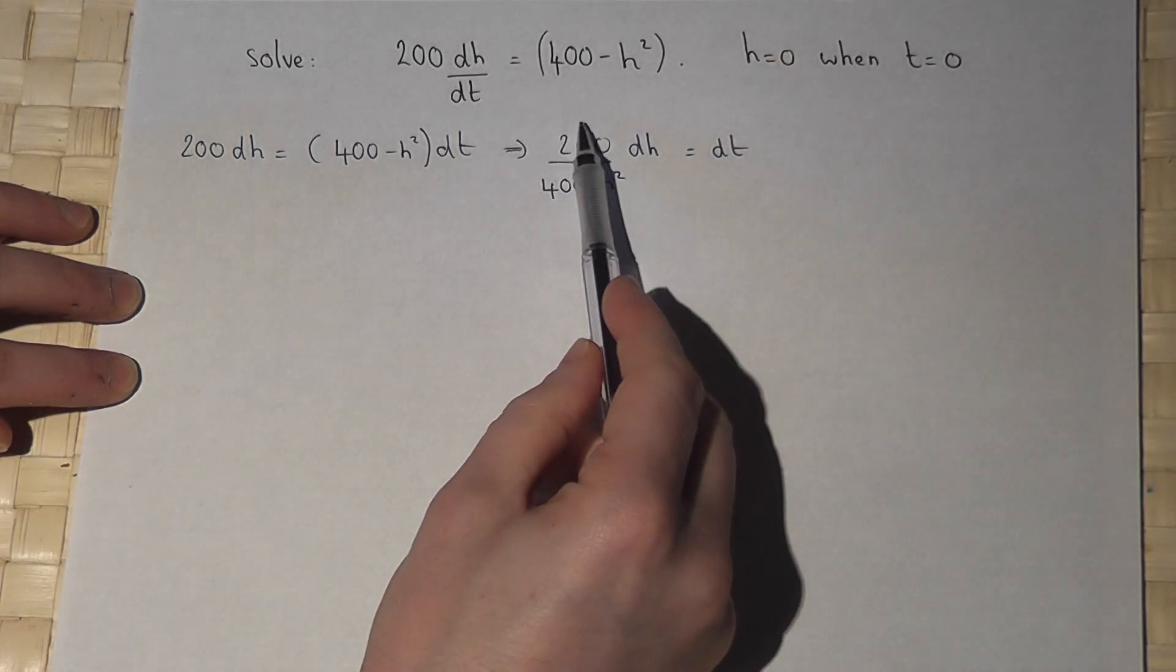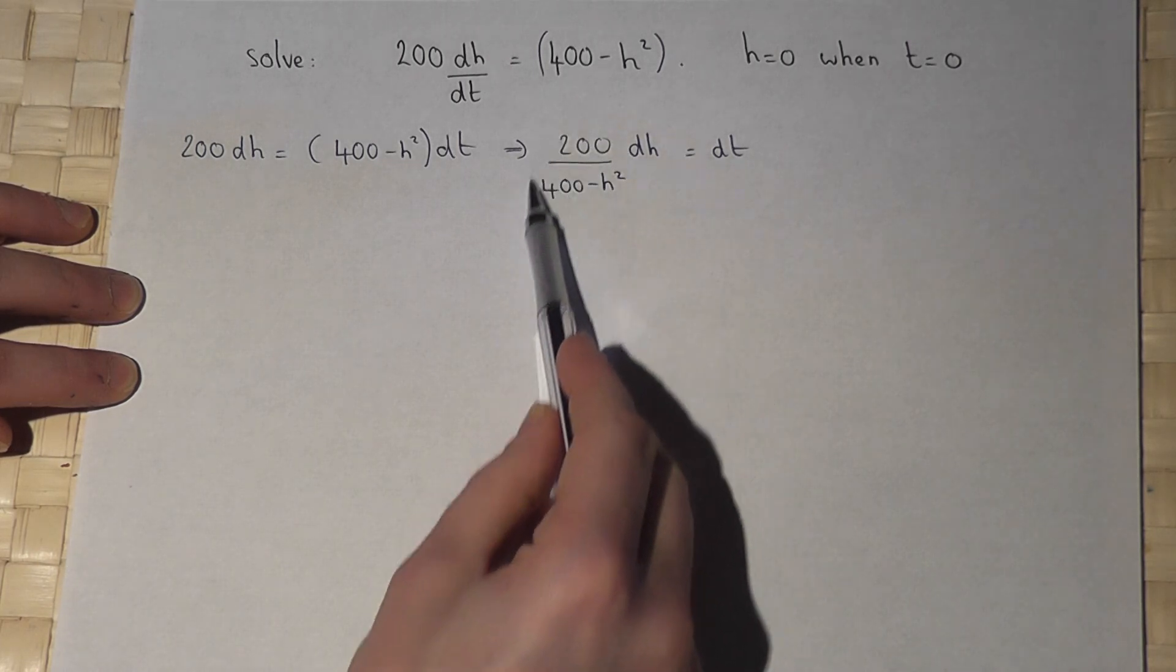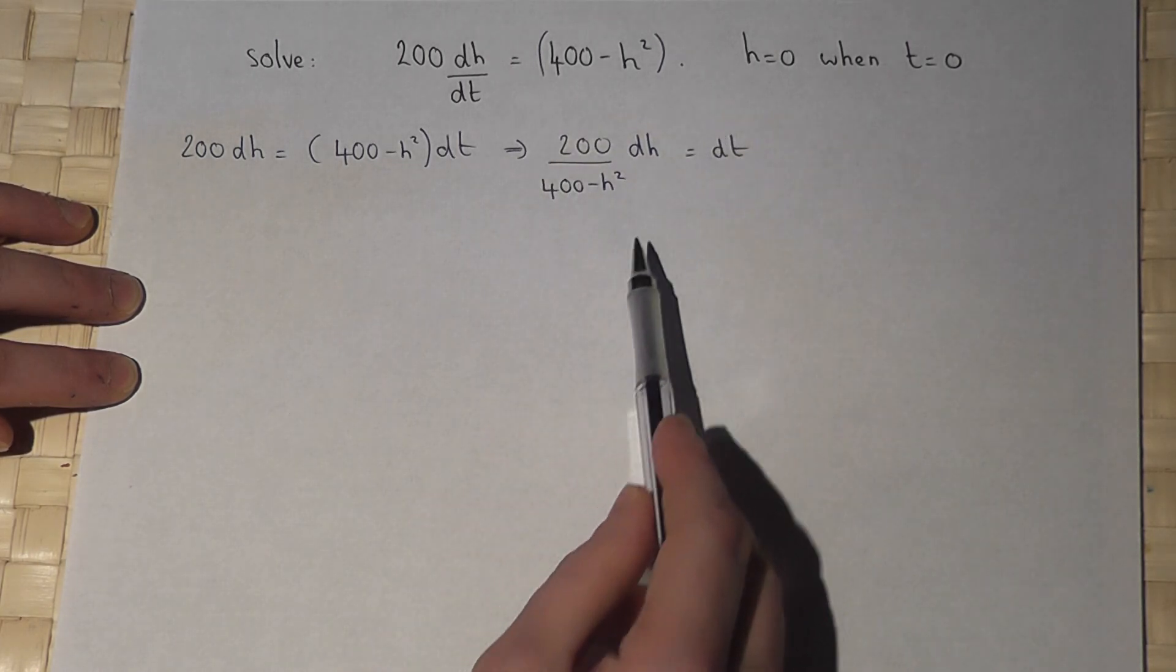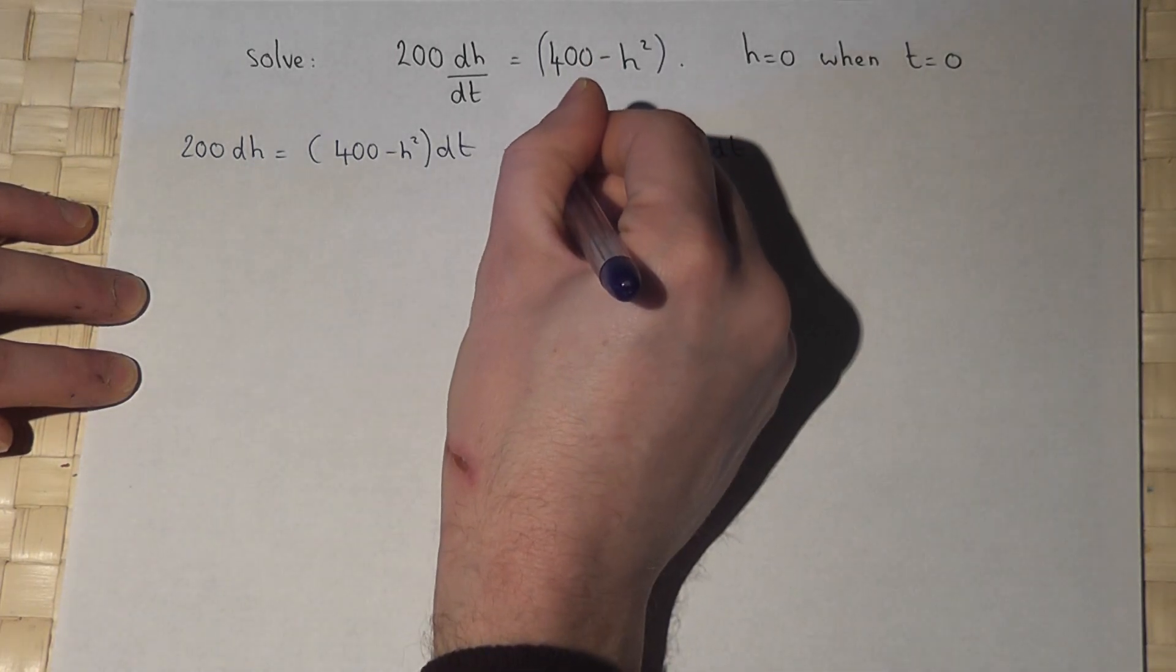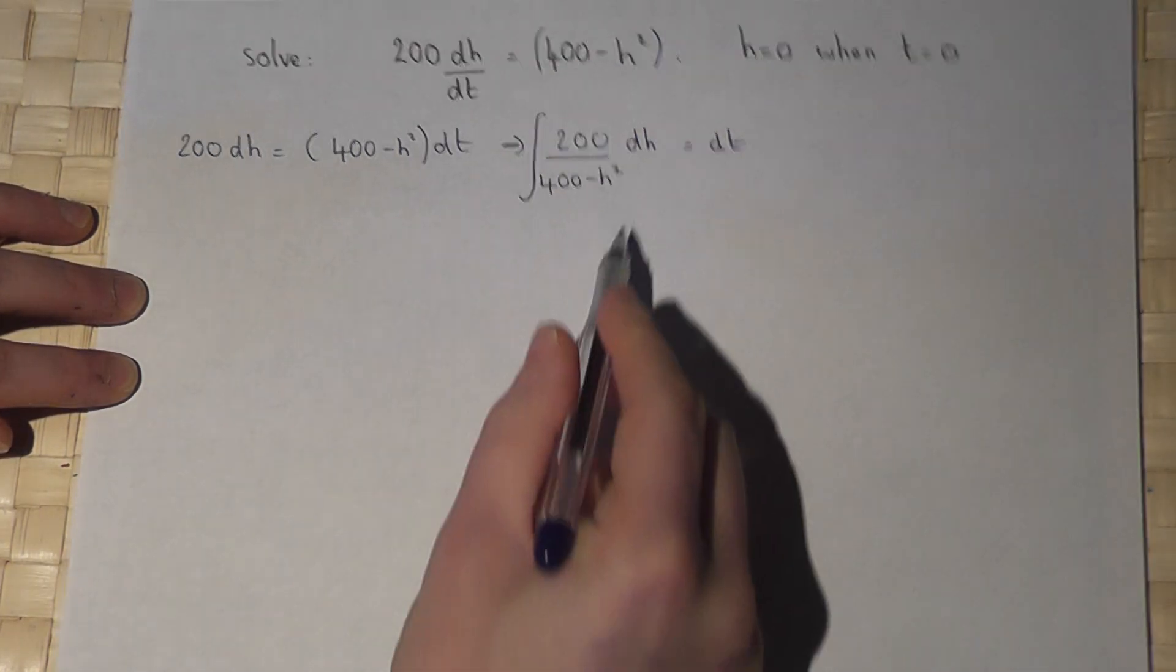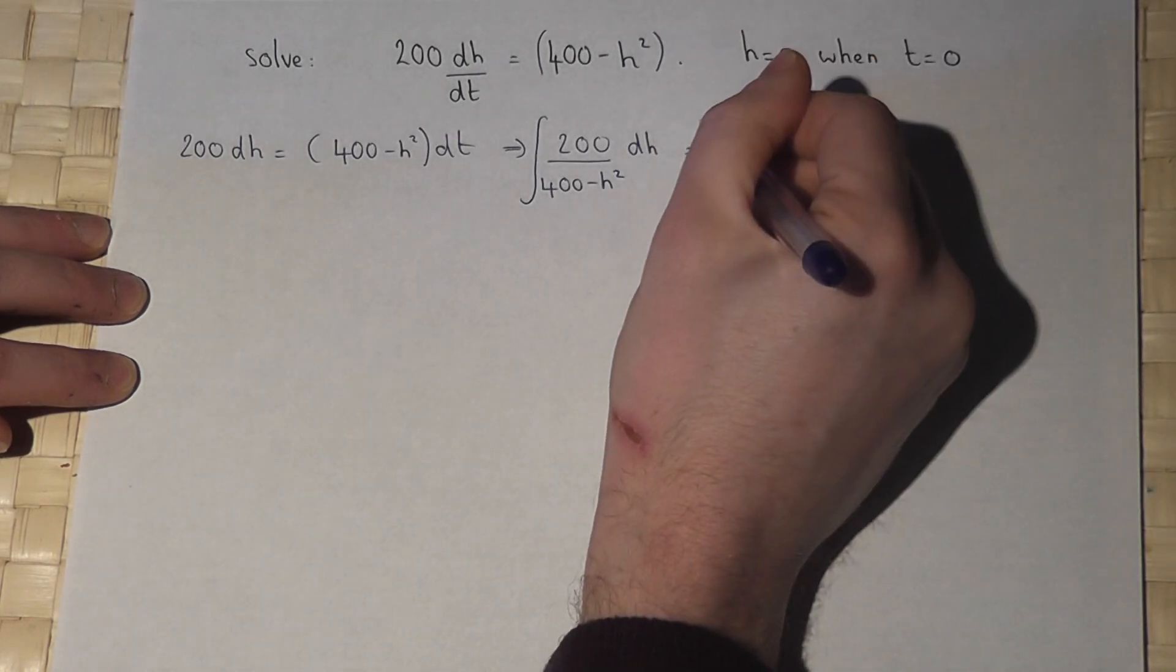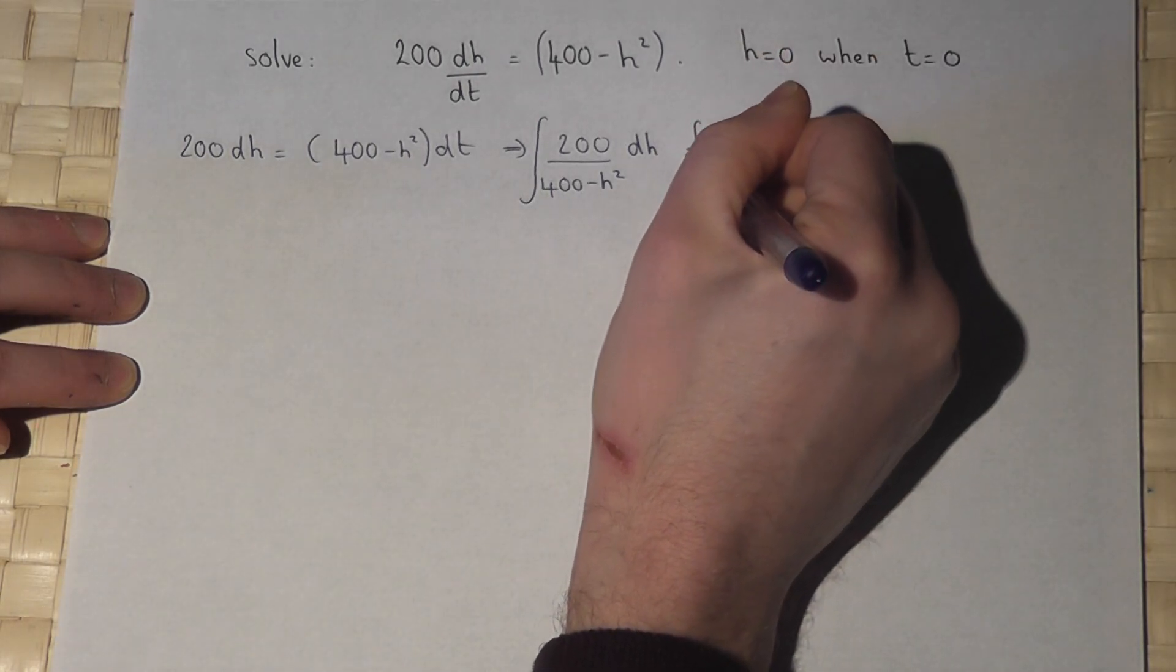So the left hand side is a function of h, the right hand side is a function of t. And to solve this I need to integrate the left hand side with respect to h and the right hand side with respect to t.